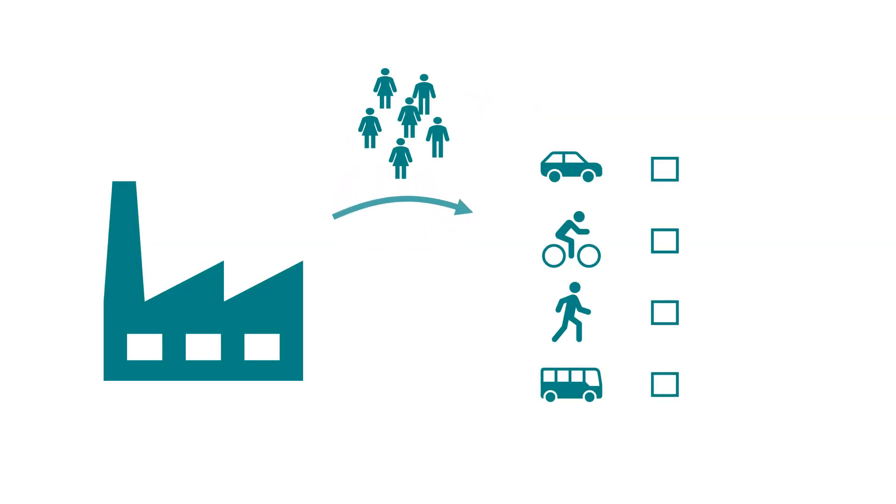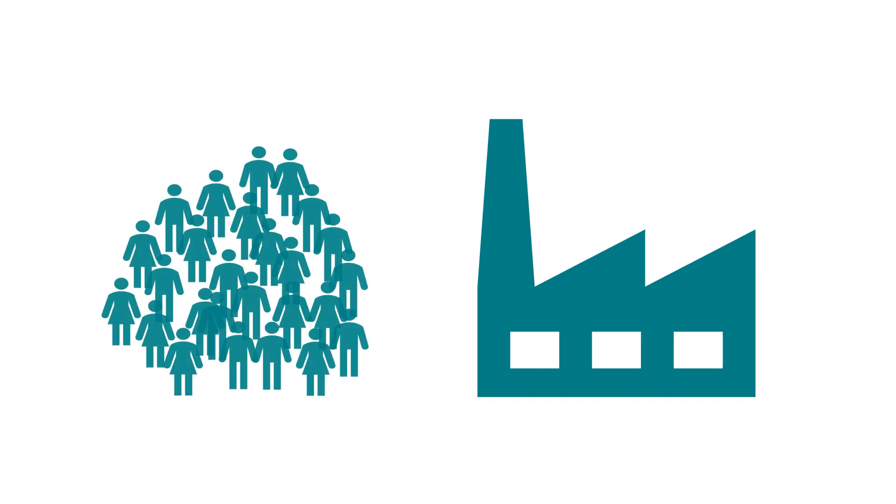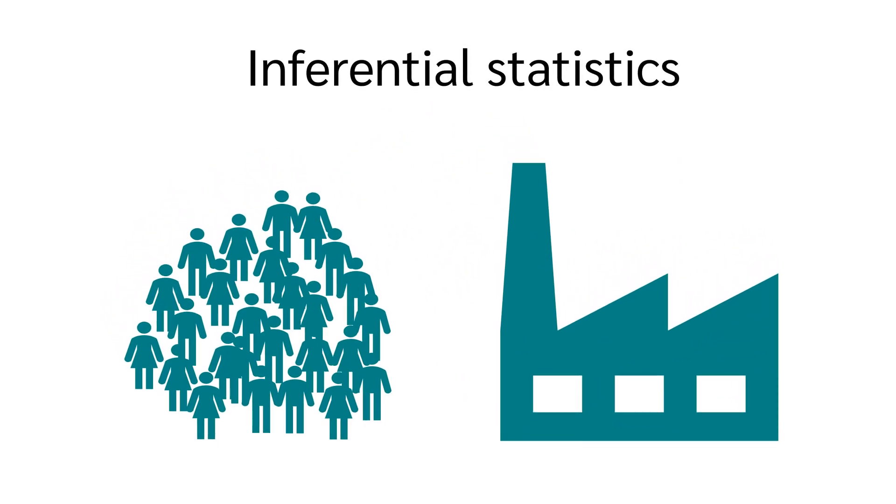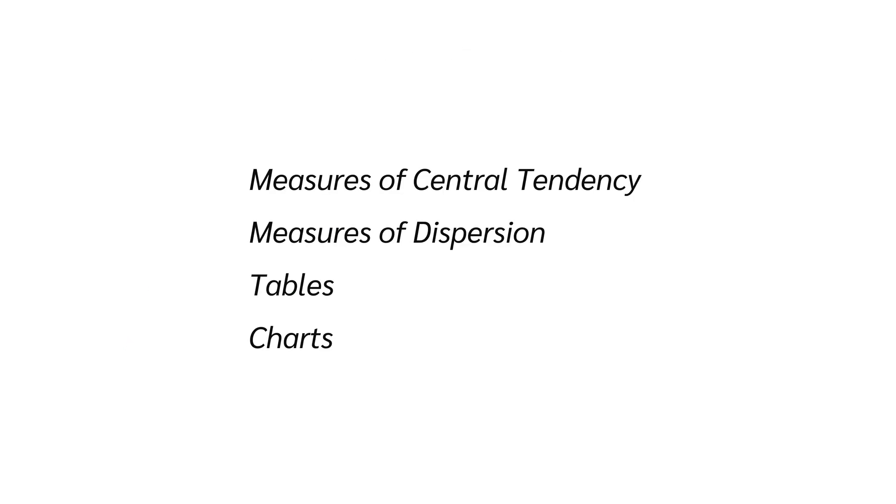Put simply, just because we know how some people from one company get to work, we cannot say how all working people of the company get to work. This is the task of inferential statistics. To describe data descriptively, we now look at the four key components.